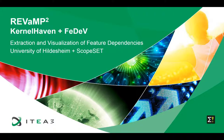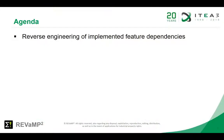Hello and welcome to our presentation of KernelHaven and VDEV. In this video we demonstrate how to reverse engineer feature dependencies from code files using KernelHaven. KernelHaven is an experimentation workbench to conduct different analyses, realized as a fast command line tool that produces different analysis results.